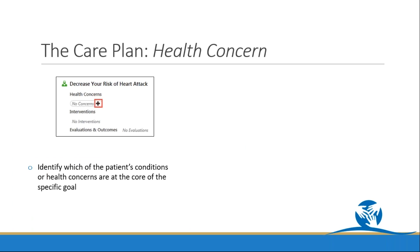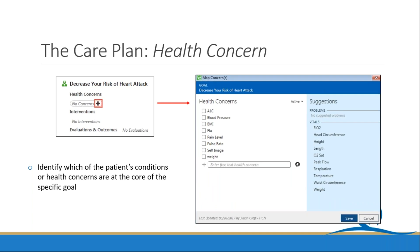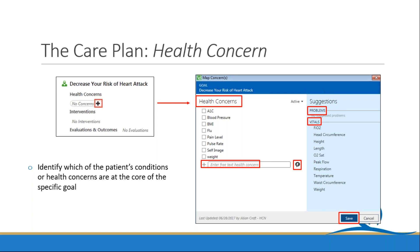The health concern is used to identify which of the patient's conditions or concerns are at the core of this specific goal. Start by clicking the plus sign below the section. You can identify the health concern by checking the box next to one already used for this patient, pulling it from the patient's problem list or vitals, or using free text or quick text. Once you've made your selection, press save.